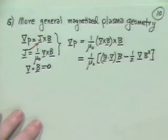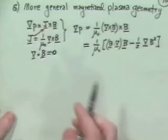That's kind of ugly looking. So if you use a vector identity, it turns out you can also write this as 1 over mu naught times B dot del B minus 1 half del B squared. This is just a working out of a vector identity.